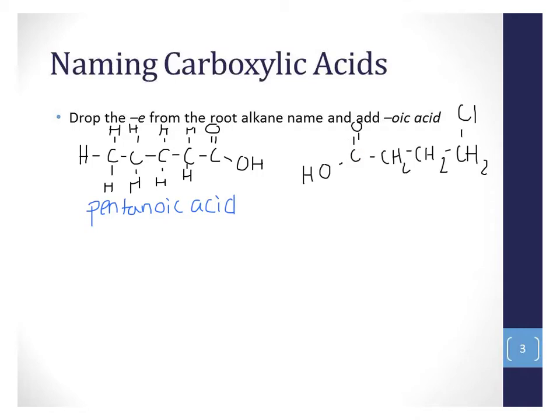Here we have a four-carbon chain, so the root name for that would be butane, giving us butanoic acid. But we also have on carbon four a chloro substituent, so our name is going to be 4-chlorobutanoic acid.